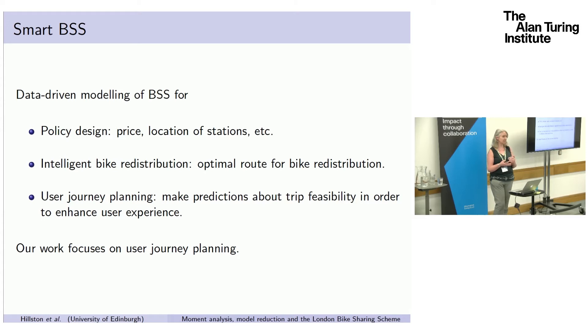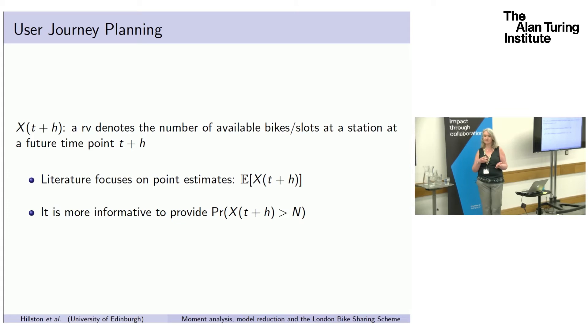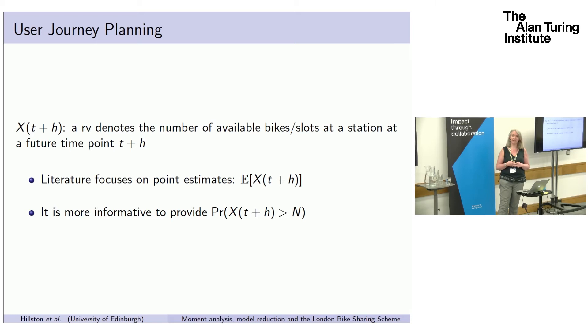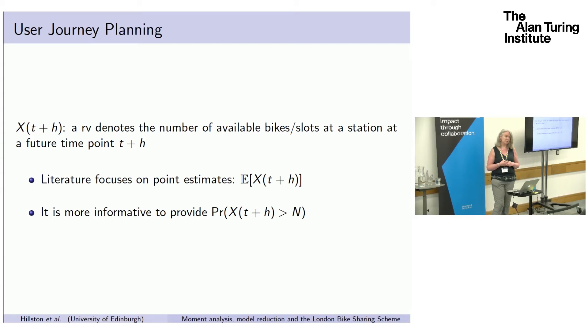We want to find the number of available bikes at a station at some time in the future h. So t is my current time, h is my time horizon, and this is a random variable. In the literature, mostly they focus on point estimates, just the expectation of this random variable, or sometimes purely use historical data. So they just say, well this time for the last 10 days there's been three bikes, so there'll be three bikes today.